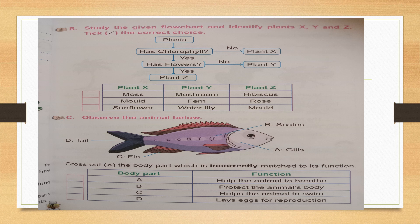Option D — tail: lays eggs for reproduction. Does the tail lay eggs? Think nicely. If it is wrong, give a cross. Otherwise don't write anything. These are your homework — page number 13 in full and the crossword on page 12. These two homework activities are very interesting. You try it. Okay children, take care.